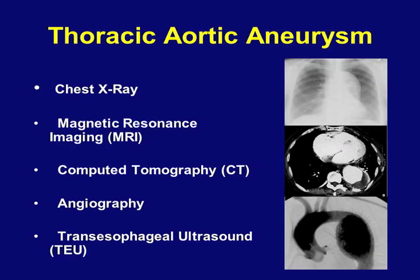We screen for these entities by using chest x-ray and a variety of increasingly sophisticated imaging techniques, including magnetic resonance imaging and computed tomography. Angiography still has a role, and transesophageal echocardiogram is very useful, especially for the ascending aorta.